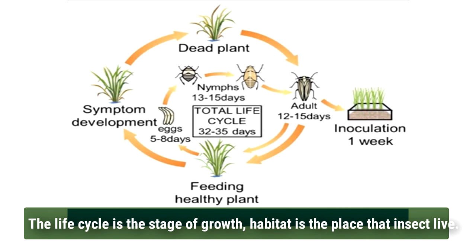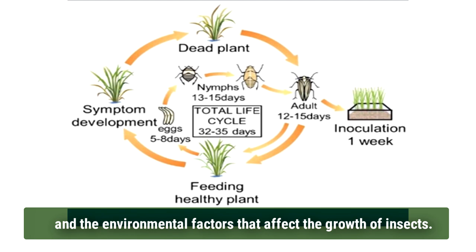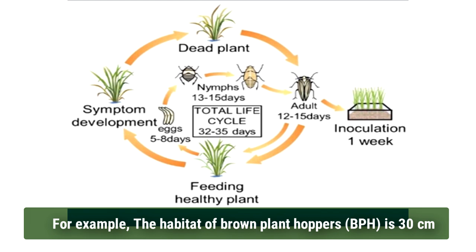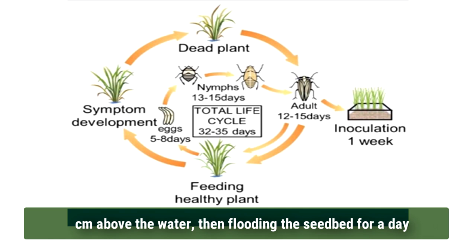For example, the habitat of brown planthoppers is about 30 cm above the water. Then, flood the seedbed for a day so that only the tips of the seedlings are exposed. This will control the brown planthoppers.